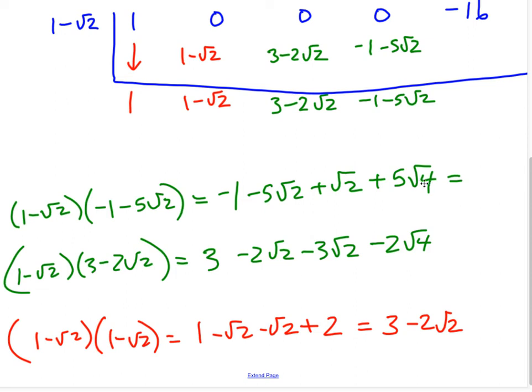5 root 4. So 5 root 4, root 4 is 2, 2 times 5 is 10. 10 take away 1 would be 9, and then minus 5 root 2 plus 1 root 2 would be minus 4 root 2. Okay, then I add minus 16 plus 9, it'd be a negative 7, minus 4 root 2.